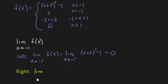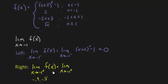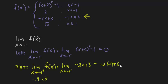Now doing the right-hand limit — make sure you use the appropriate notation with the plus sign. I need to figure out what function to use. Approaching -1 from the right means I'm slightly to the right of -1, so those would be points like -0.9 or -0.8. Figure out where you are — it's between -1 and 1. So for -1 from the right, I'm going to use -2x + 3. Plugging in -1 gives -2(-1) + 3, that's 2 + 3, which is 5.